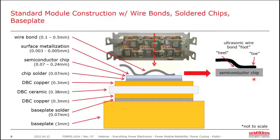Our focus is industrial power semiconductor modules, primarily fast switching types with an IGBT, MOSFETs, or diodes, above roughly 10 amps nominal current rating. The majority of these modules are constructed as shown in this cross-section: aluminum bond wires ultrasonically welded to a semiconductor chip via a thin aluminum metallization layer, the chip soldered onto a direct bonded copper (DBC) substrate consisting of copper-ceramic-copper, and the DBC then soldered onto a thick base plate. Other packaging technologies exist, but this construction is by far the most common in industry.